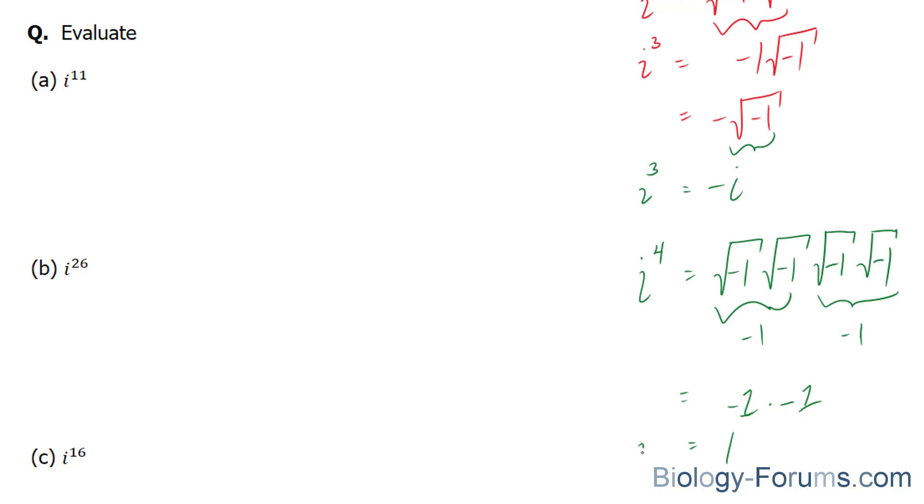we have negative 1 times negative 1 is equal to 1. So, therefore, i to the power of 4 is equal to 1. Now, I want you to pay attention to this next part. Any multiple of 4 will also equal to 1.